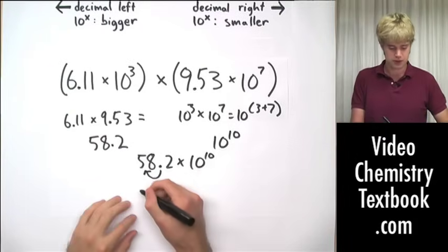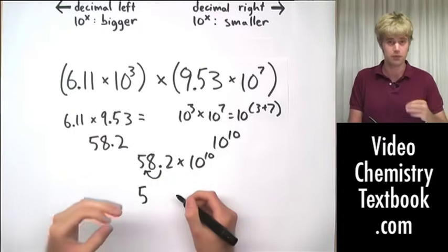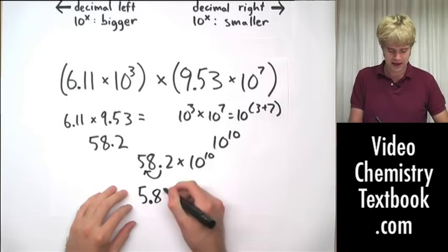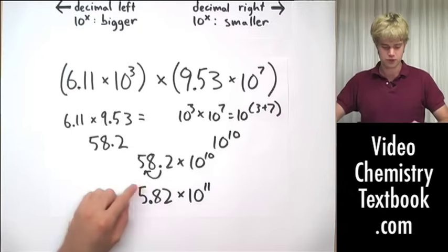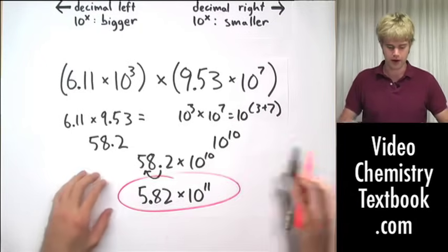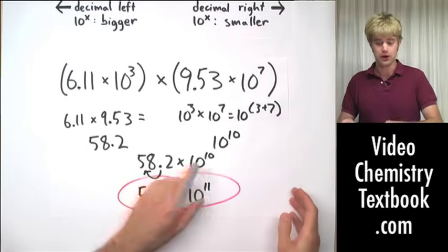So our new answer expressed in correct scientific notation will be 5.82 times 10 to the eleventh, because we move this decimal place over one and the number here gets bigger.